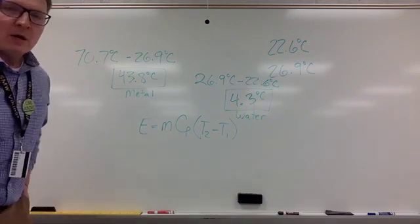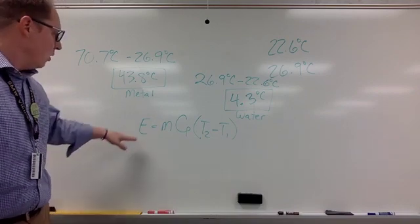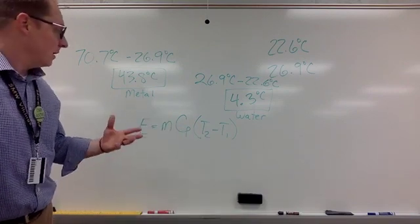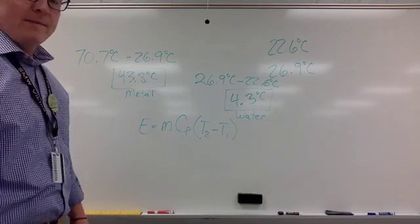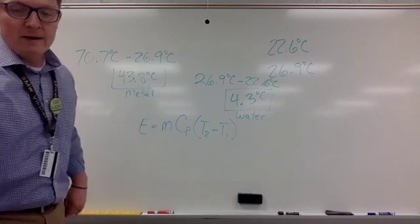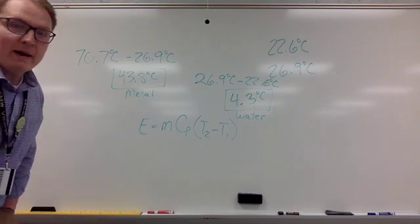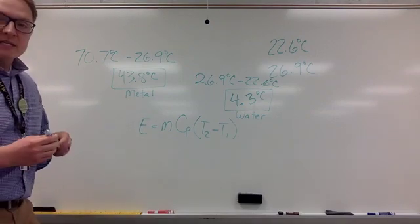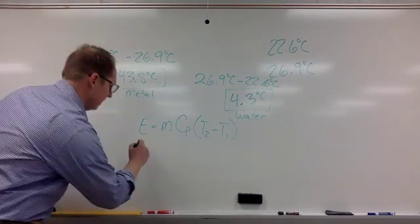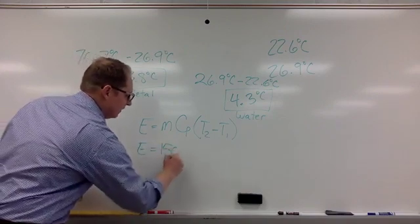The question asks us to use this equation and focus on the water, figure out how much energy the water absorbed from the metal. So we're going to solve for E. Everything is set up how it's supposed to be, we just now have to solve by plugging in what we know. How much actual water did we deal with? You've got to look at the mass of the water in the calorimeter. For some of you, you matched the mass of metal; for others, you used a mass of 150 for all of your cups. The energy is going to be equal to, in my case, I used 150 grams of water.